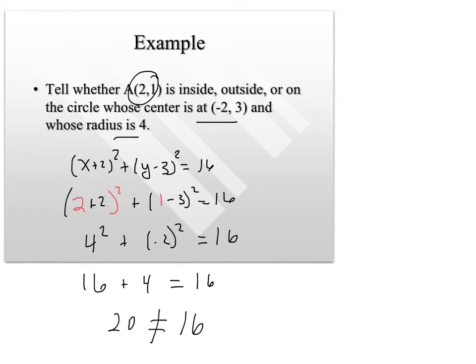So I have 16 plus 4, and I get a statement where 20 is equal to 16. Well, I know this is not true. So because the value is greater than the radius, it's outside. If the value is equal to the radius, it would be on.